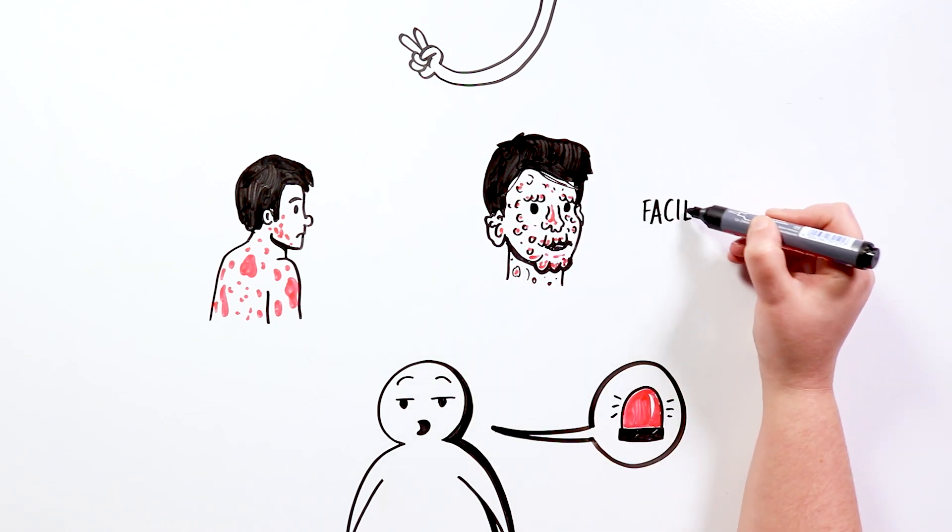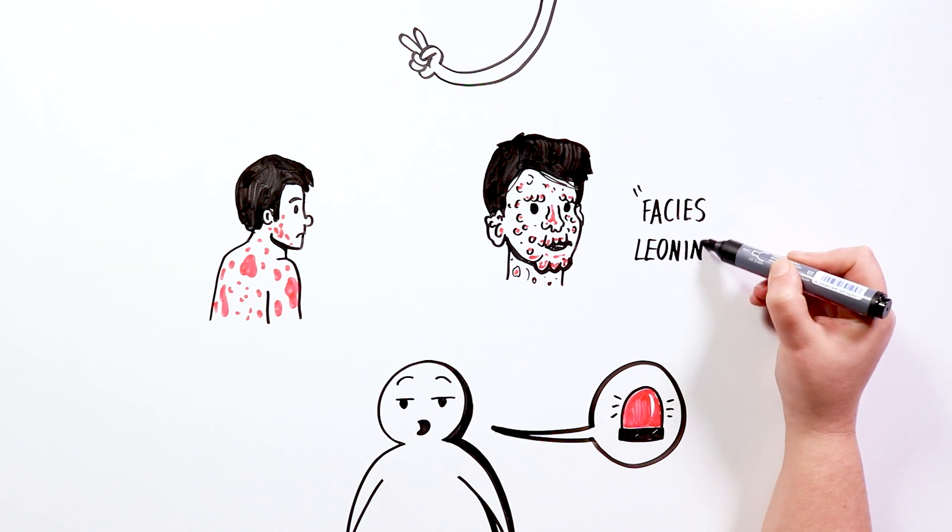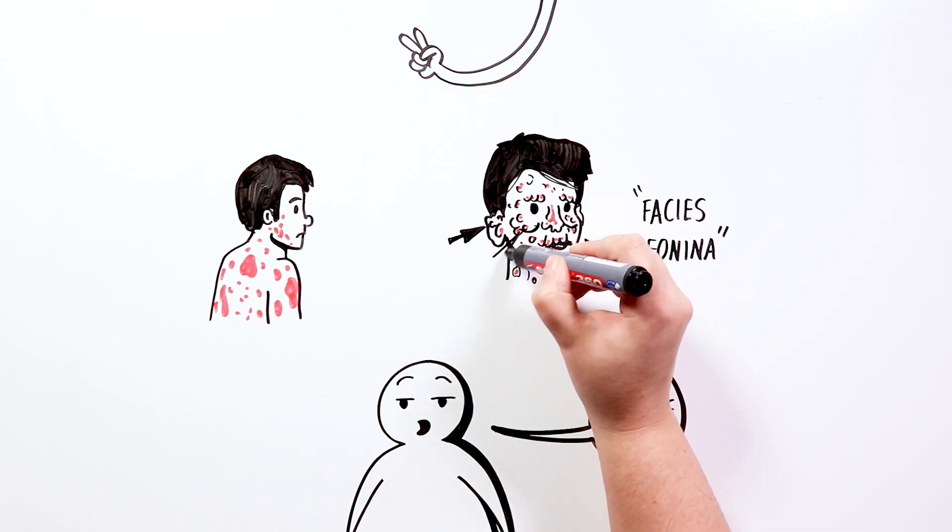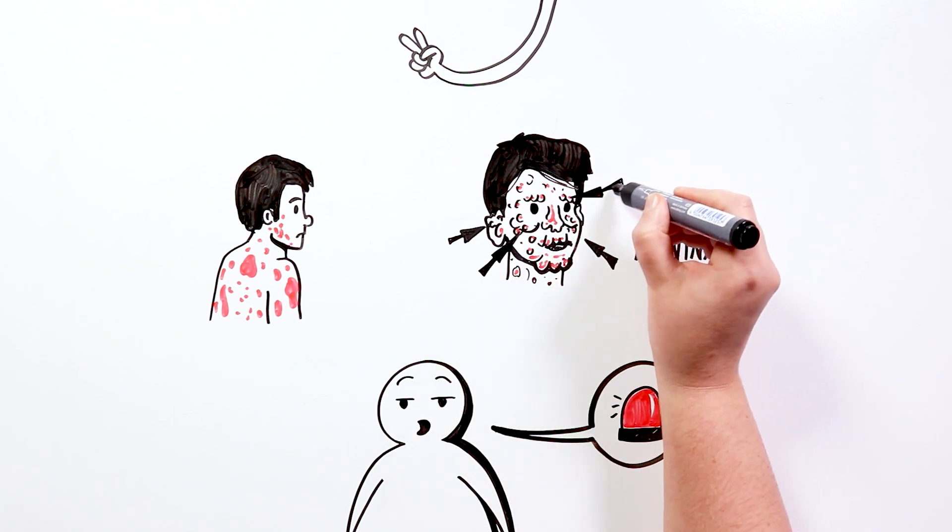The leonine facies appears in advanced stages, characterized by multiple nodules on the face and ears, pronounced cheekbones, and drooping tail of the eyebrows.